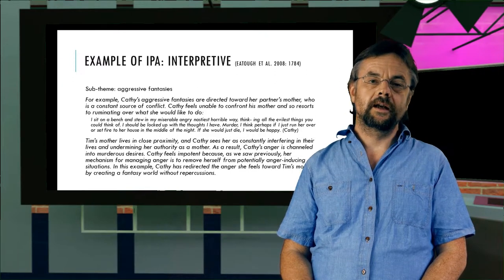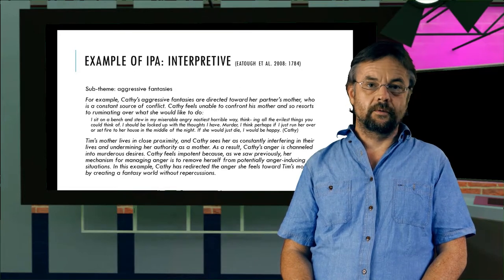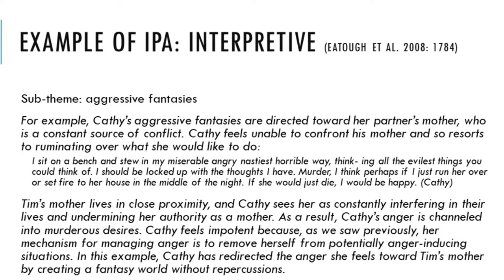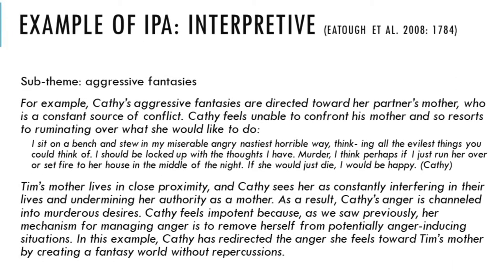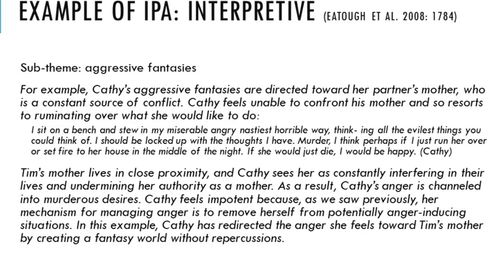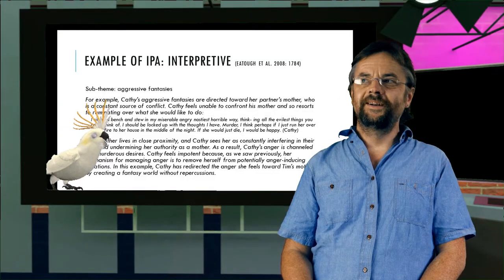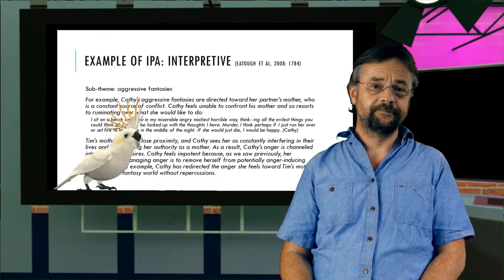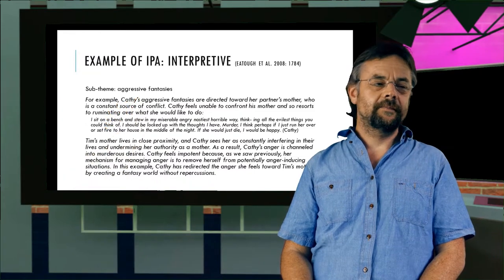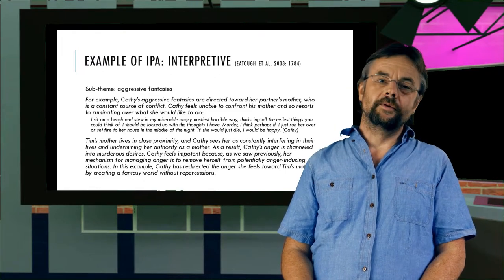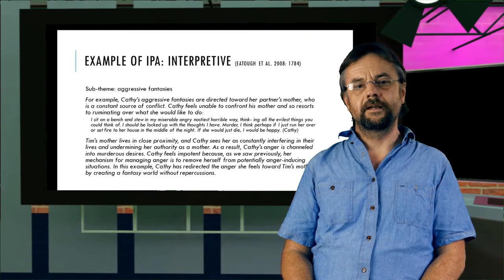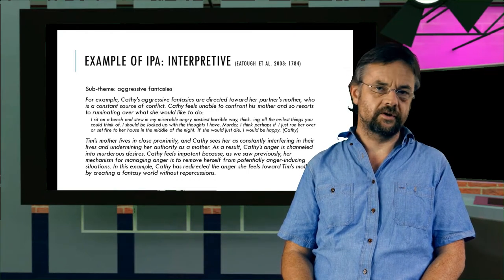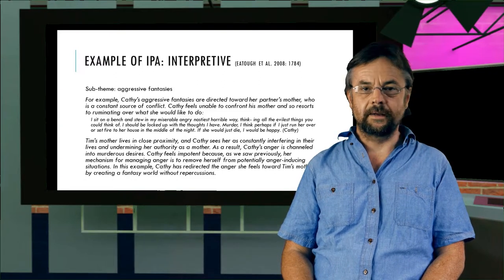This is another good example of how using an IPA approach you might interpret your data in a particular way. This example here illustrates further how the researcher draws on one person's interview as a whole to understand their expression of anger through aggressive fantasies. This also illustrates one of the limitations of an IPA approach. It doesn't draw upon social context and social conditions as a way to interpret the data.